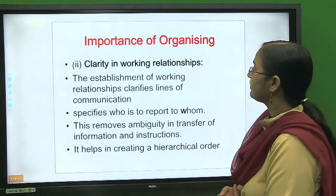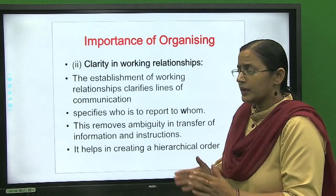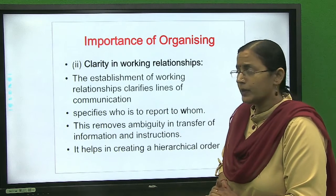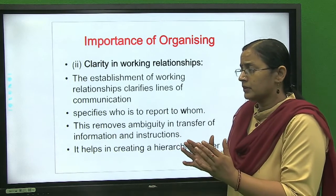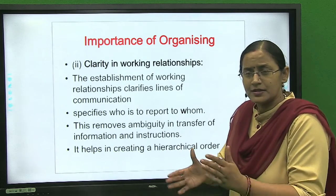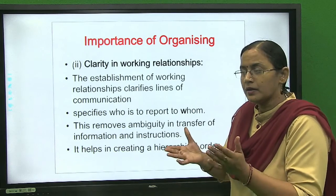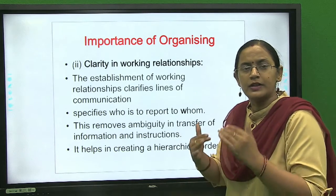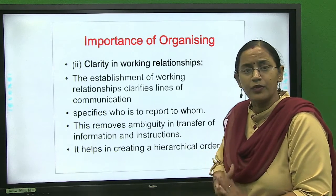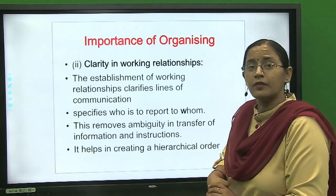The next importance is clarity in working relationships. Organizing provides the establishment of reporting relationships, meaning you have a formal line of authority — that is the scalar chain. Unity of command means you will receive orders from one boss only. Next is span of management, which refers to the number of subordinates working under one superior.